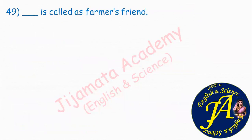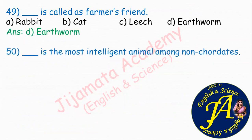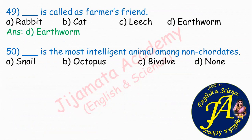Dash is called as farmer's friend. Options are rabbit, cat, leech, earthworm. Option D is correct: earthworm (gandu) is the farmer's friend. Dash is the most intelligent animal among non-chordates. Options are snail, octopus, by-valve, none. Option B is correct: octopus is the most intelligent animal among non-chordates.